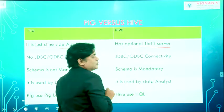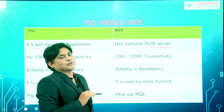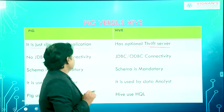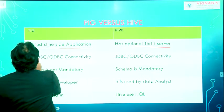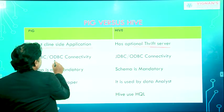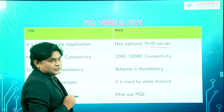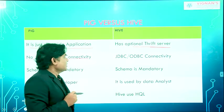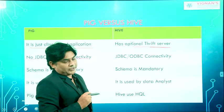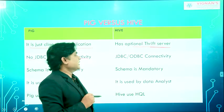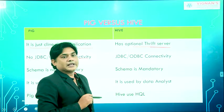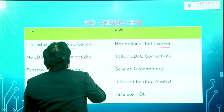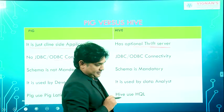With Hive you can use a Beeline client and also access the server. So Hive has an optional Thrift server. Pig does not need JDBC or ODBC connectivity, but Hive requires JDBC and ODBC connectivity because when you're going to access the server you definitely need that connectivity.